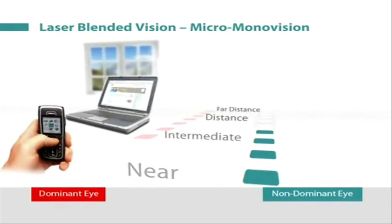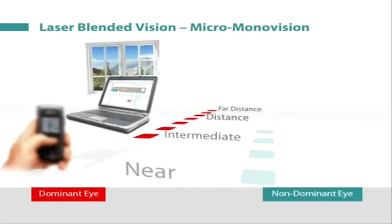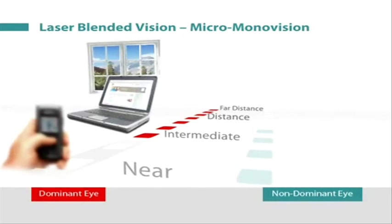This results in one eye being clearly focused for near vision but only slightly blurred at distance, and the other eye being clearly focused for distance vision but only slightly blurred at near.